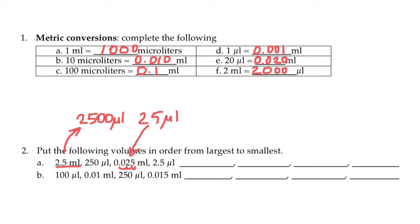So the biggest number here is 2.5 milliliters. Next we have 250 microliters. Next one comes 0.025 milliliters. And the last one is going to be 2.5 microliters.